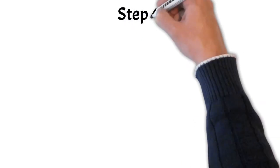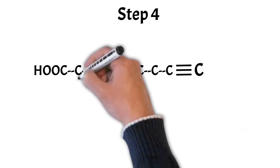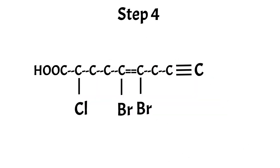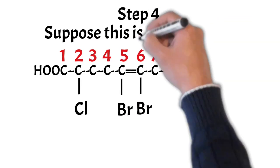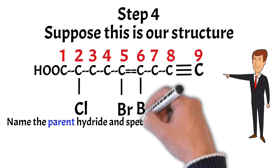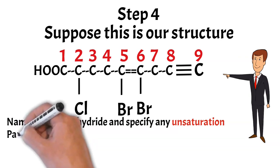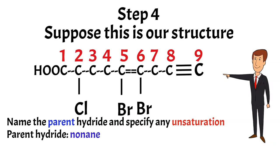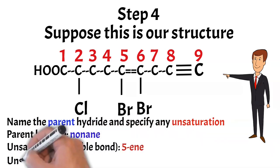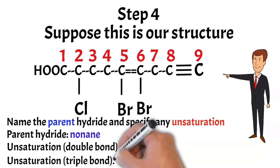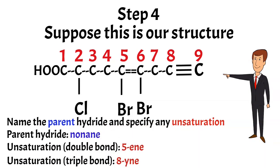Step number 4: suppose this is our structure. In this step you name the parent hydride and specify any unsaturation if present. This compound's parent chain has 9 carbons, therefore the root word will be taken from 'nonane'. As this compound contains unsaturation, the primary suffix '-ane' will be dropped in favor of unsaturation. The double bond is present at 5th position while triple bond is at position number 8. Therefore the primary suffix will be '5-ene, 8-yne'. So the parent hydride's name will be 'non-5-en-8-yne'.